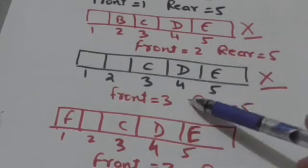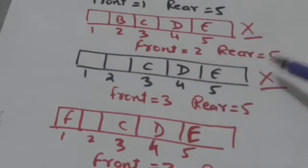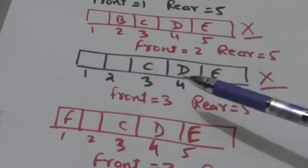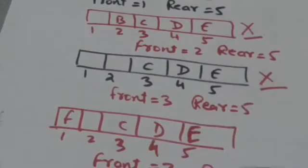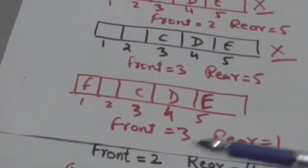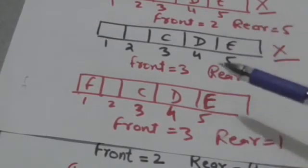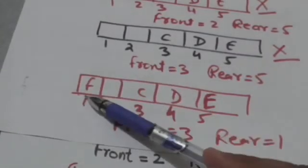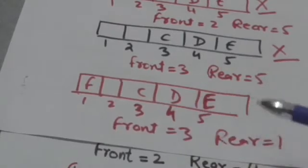So if array X is circular, then to insert element F in this condition, the value of rear will become 1 when we increase it by 1. Then we can store element F at index 1 in array X.